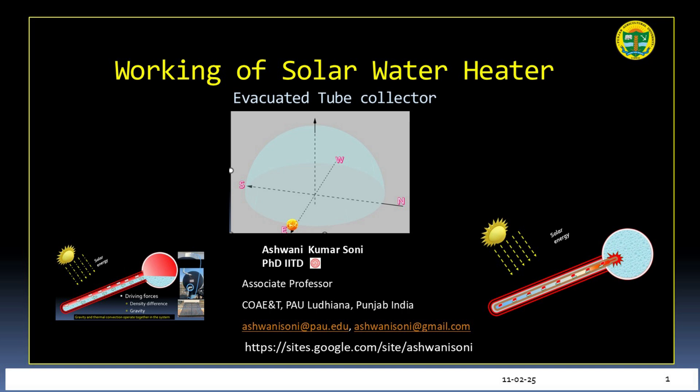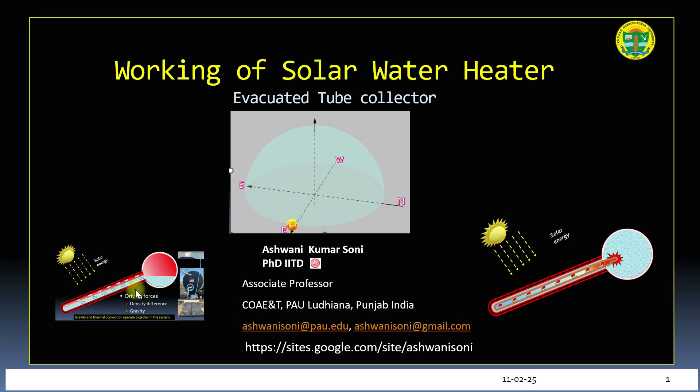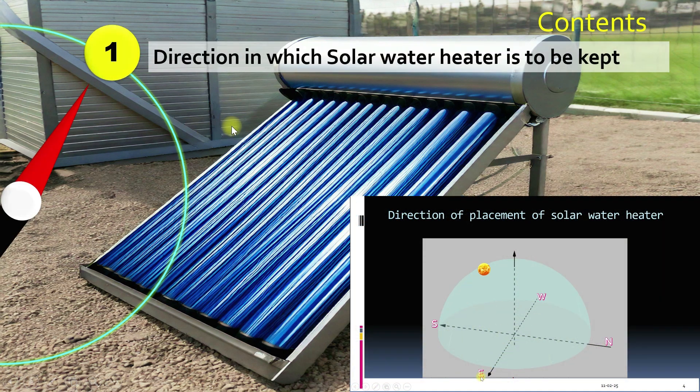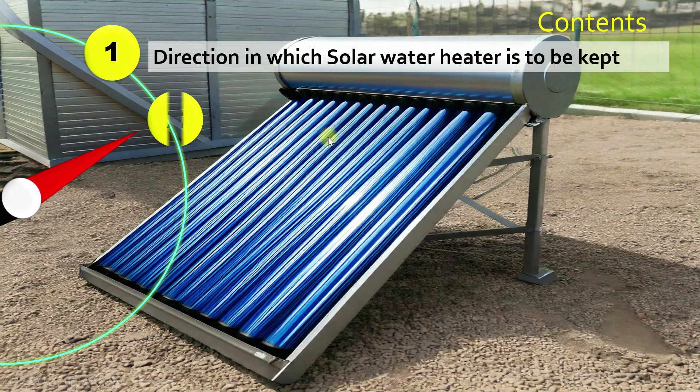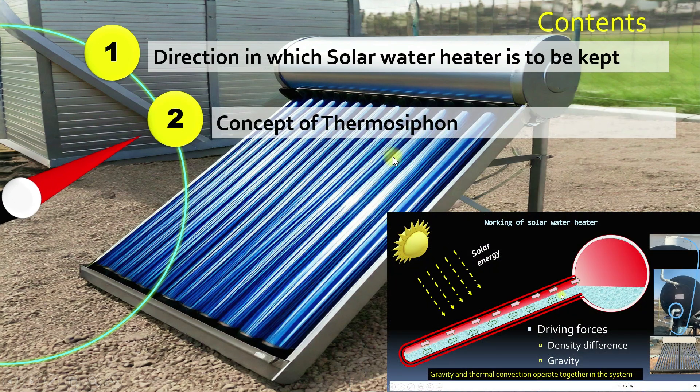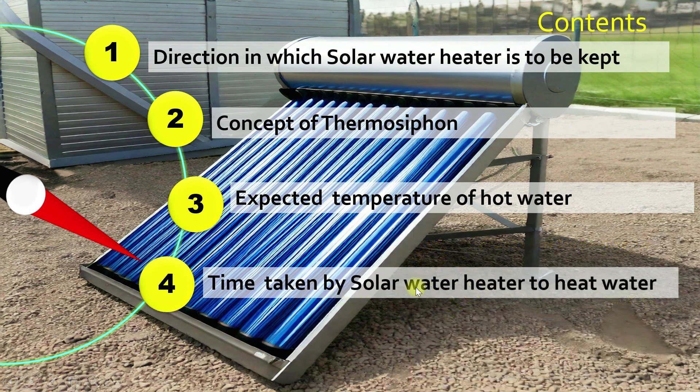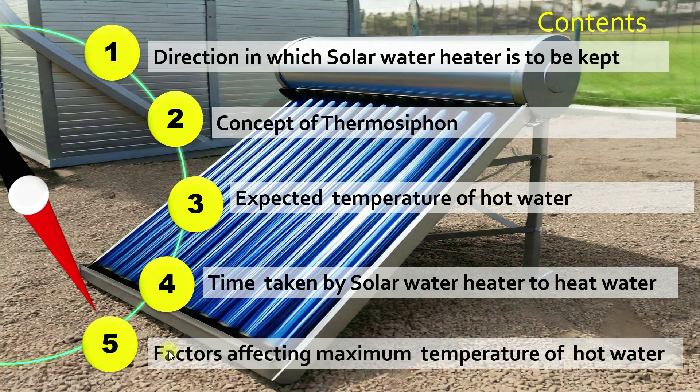Welcome to this channel. Today we will explore the working of an evacuated tube solar water heater. We will start by understanding the optimal direction for placing a solar water heater, then move on to the concept of thermosiphon, the expected temperature of hot water and how long it takes to heat the water. We will also discuss the factors that affect the maximum temperature of hot water. By the end of this video, you will have a clear understanding of how to get the most out of your solar water heater.